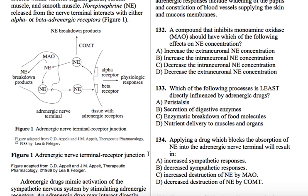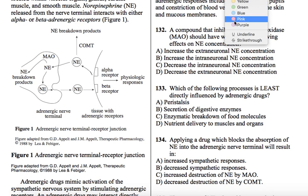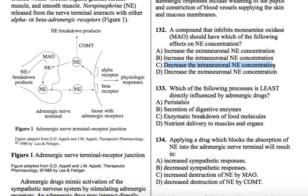We're going to knock out C and D right away, because we know that NE is going to increase. So the difference between A and B is where it happens. We go back to our picture — where is MAO acting? It's not acting in the extra-neuronal space; it's acting in the intra-neuronal space. It's within the neuron — you don't have any MAO out in the cleft. So then we can pick B as the answer.